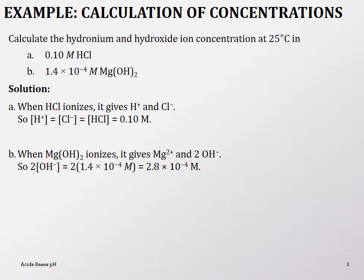Before we get into the pH calculation, let's do a couple of calculations for hydronium ion and hydroxide ion concentrations. We'll calculate those for 0.1 molar HCl and 1.4×10⁻⁴ molar magnesium hydroxide. Both of these are strong acids and bases.